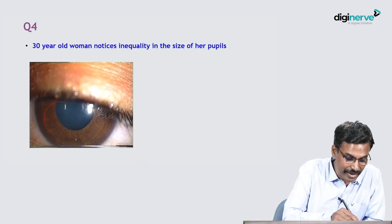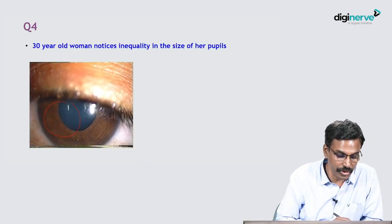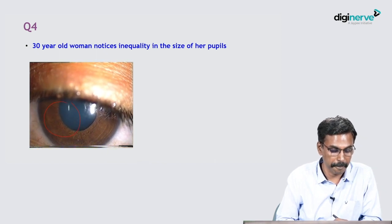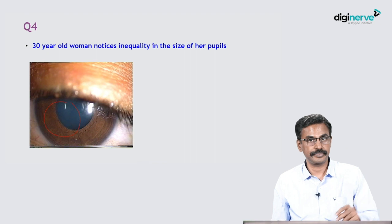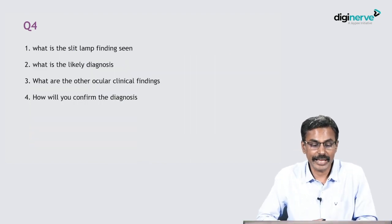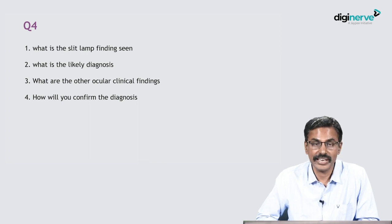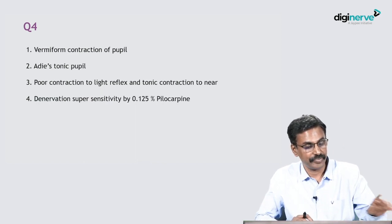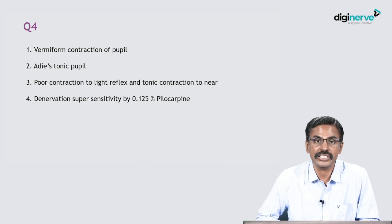The next case is a 30-year-old woman who noticed inequality in the size of her pupils. Carefully look at this finding — when light is shown into the eye, note what is happening. The slit lamp finding seen is vermiform contraction of the pupil.